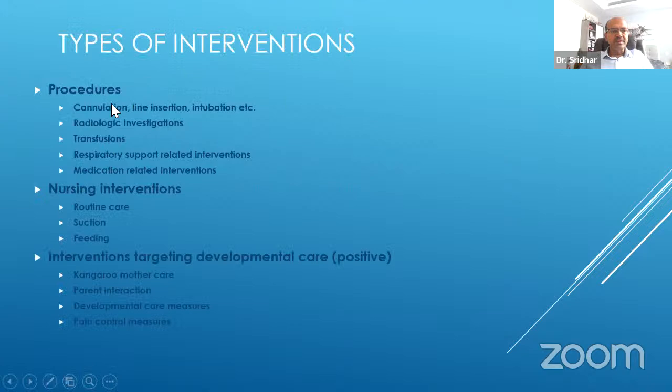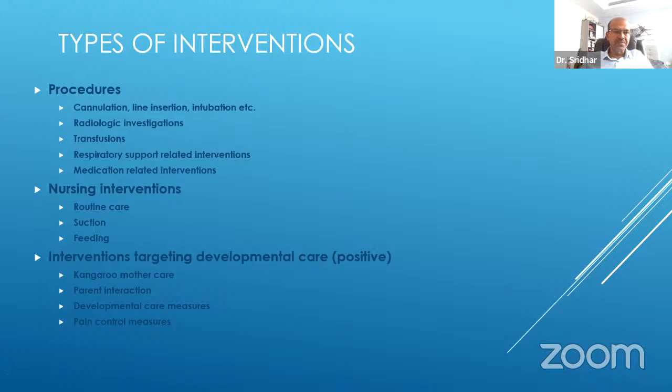The different types of interventions include procedures like cannulation, line insertion, and intubation; radiologic investigations like X-rays, CT, MRI, and barium studies; transfusions; respiratory support-related interventions like surfactant administration, invasive and non-invasive ventilation, intubation, and chest drain; and medication-related interventions, which can be oral or intravenous. Even with medication, you need to think about the route — when can you change to oral medication, since intravenous medication carries a higher risk.